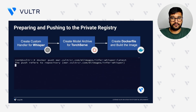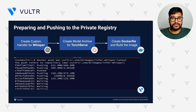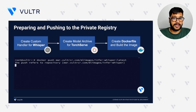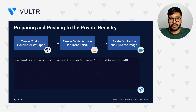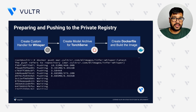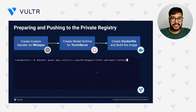Let's have a look at the preparation of our inference services. We start by creating a container image that includes a model archive and a custom handler for TorchServe. TorchServe is an open-source model serving framework from PyTorch that makes it easy to build and scale machine learning models. The image is then pushed to a private container registry. These steps are repeated for each model: Whisper for automatic speech recognition, Llama 3 as the language understanding model, and Piper as the text-to-speech model.